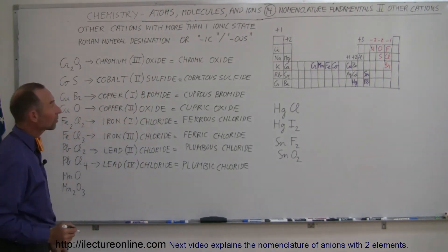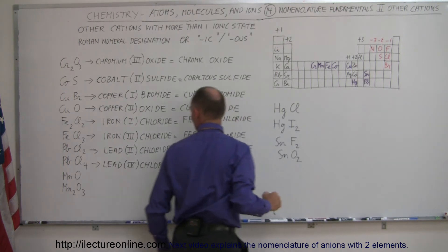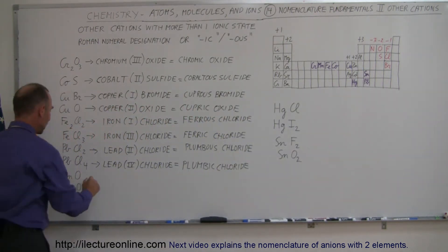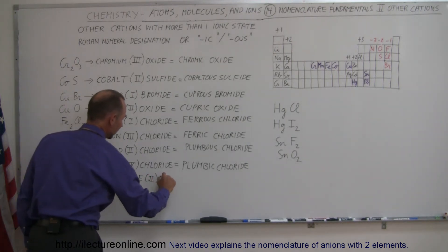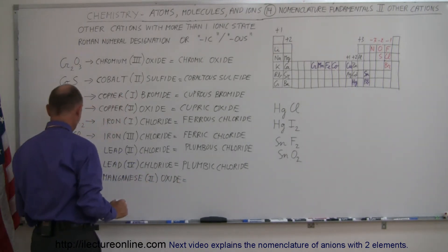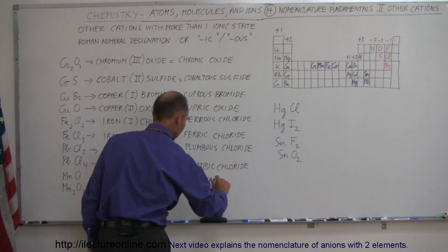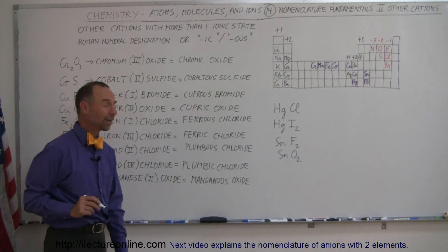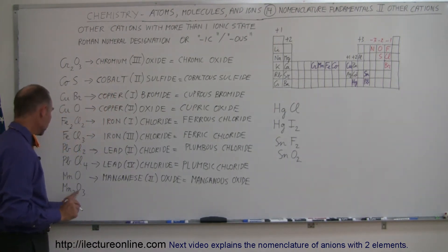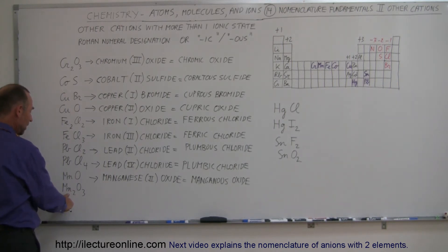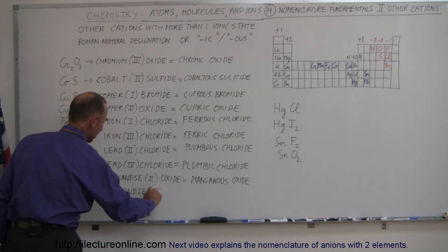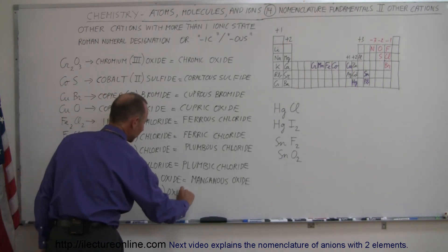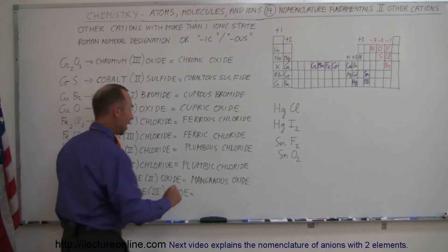Next we have manganese and oxygen. Oxygen is minus two, that means manganese has to be at a plus two state, so it becomes manganese two oxide or manganous oxide. That's the lower ionic state. And then we have manganese two and oxygen three, so three times negative two is minus six. That means manganese has to be ionized to a plus three state, so this becomes manganese three oxide, and this is going to be manganic oxide.